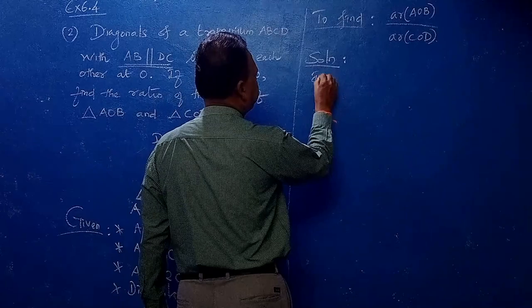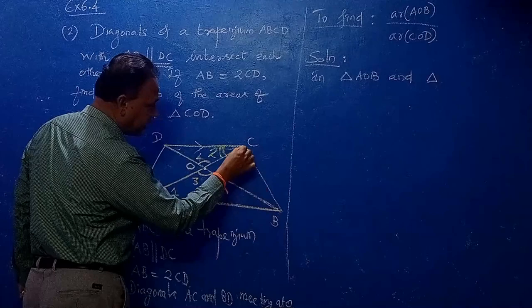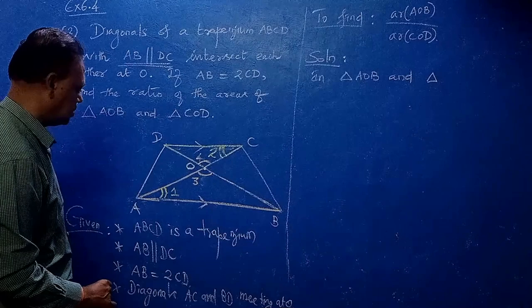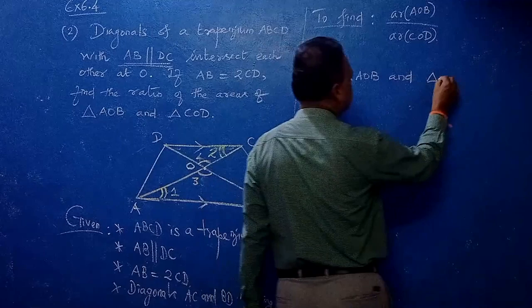In the two triangles: Triangle AOB and Triangle COD — take them correctly so the matching parts correspond. Angle 1 equals angle 2 — alternate interior angles. Angle 3 equals angle 4 — vertically opposite angles. Therefore, by AA similarity, Triangle AOB is similar to Triangle COD.